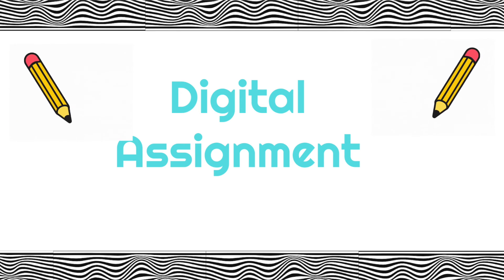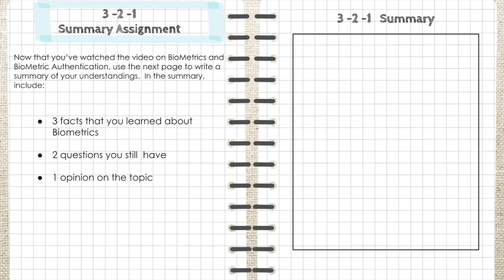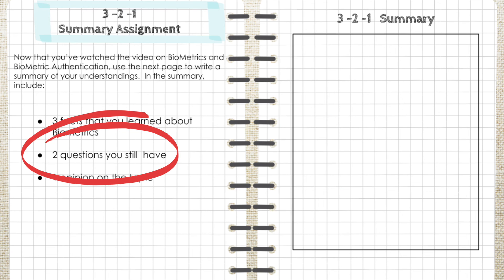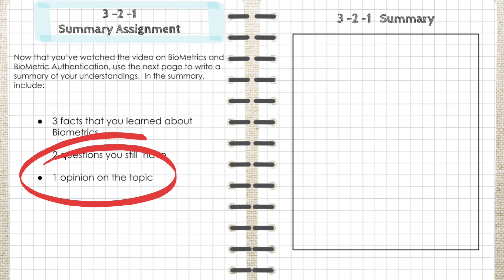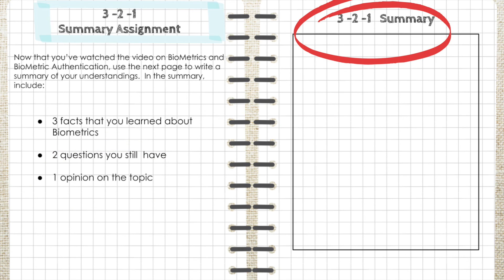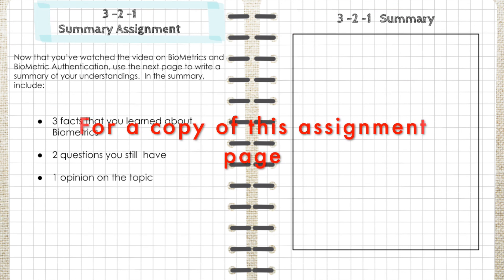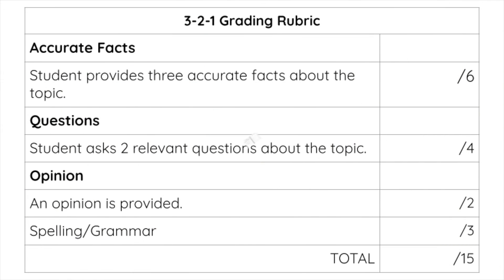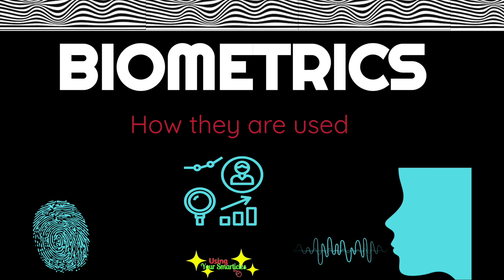For your digital assignment, write a 3-2-1 summary using this template. First, include three facts that you learned about biometrics or biometric authentication. Then include two questions that you still have on the topic. Finally, write one opinion that you have on this topic. Type your answers on this side of the page. Your work will be graded out of 15 points. Good luck!